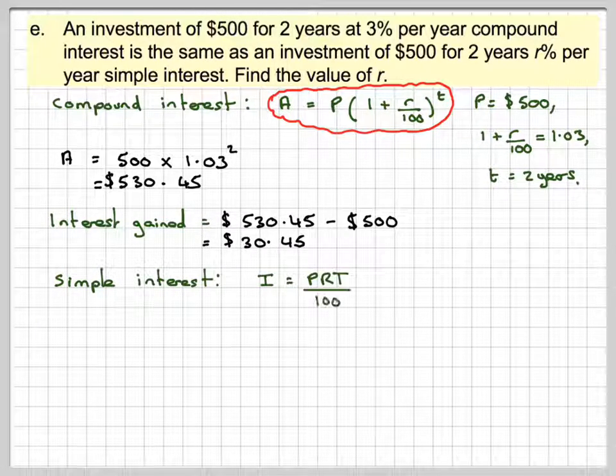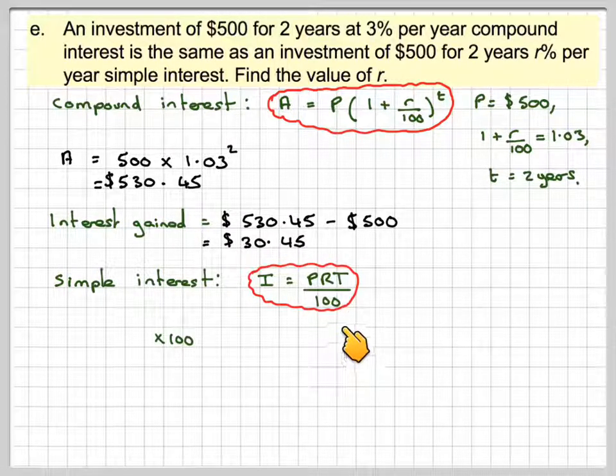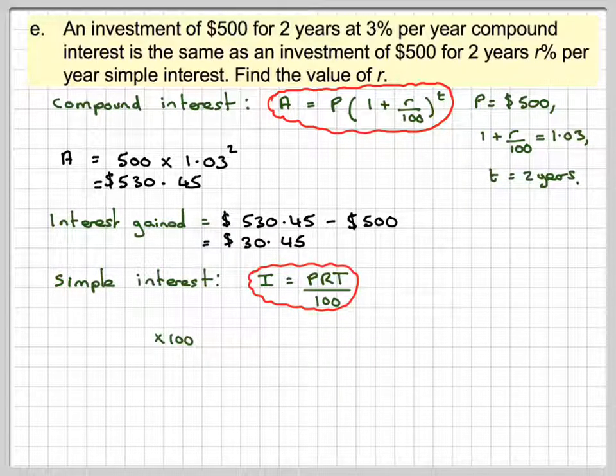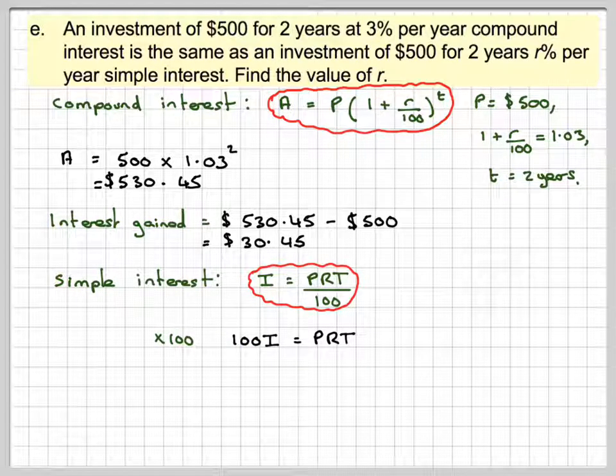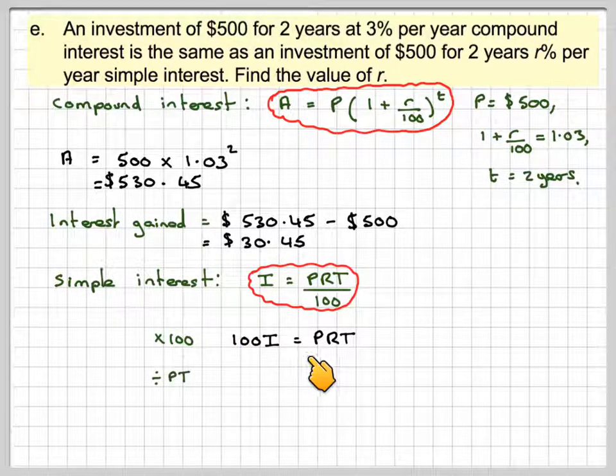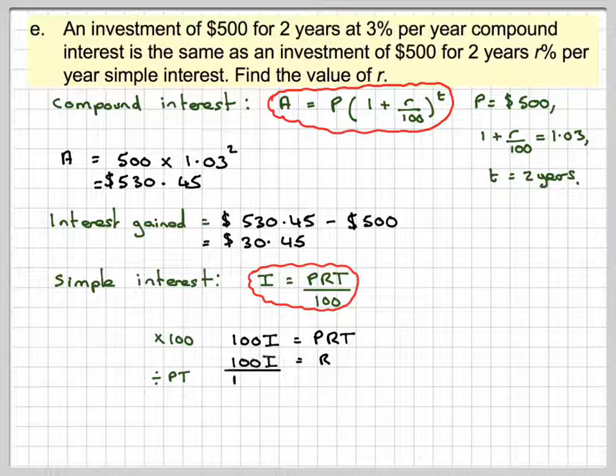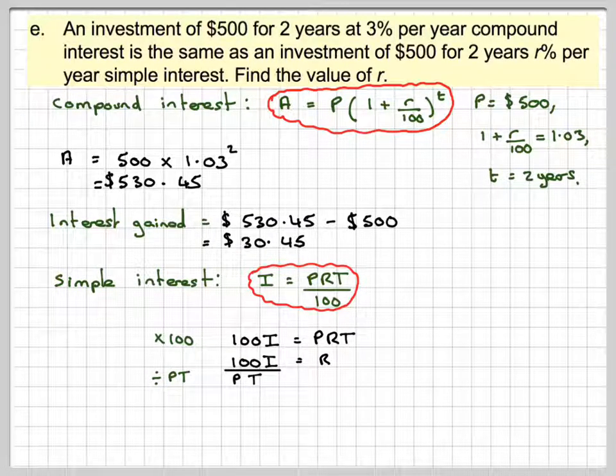The simple interest, I is equal to PRT over 100. I'm going to rearrange that because I want to find the value of R. So multiplying by 100, I'm going to get 100I is equal to PRT. Divide by PT, I'm going to get that R is 100I over PT.